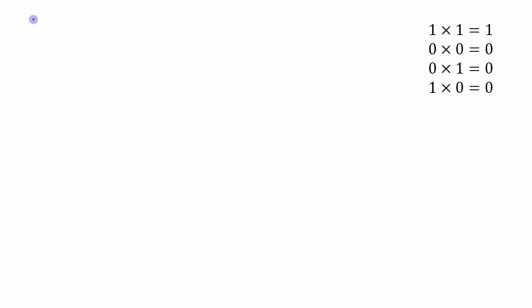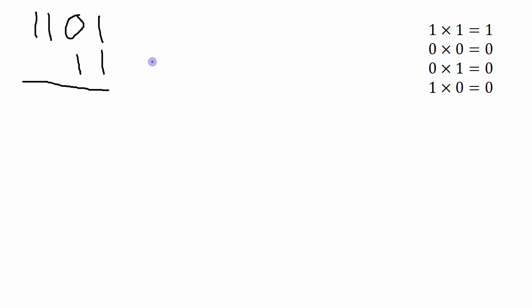Let's start with a simple example: the number 1101 times 11. We'll do all of the binary — the base two — multiplication first, and then do a double check by converting everything into base ten form and making sure the answers match up. So we've got 1101 times 11.